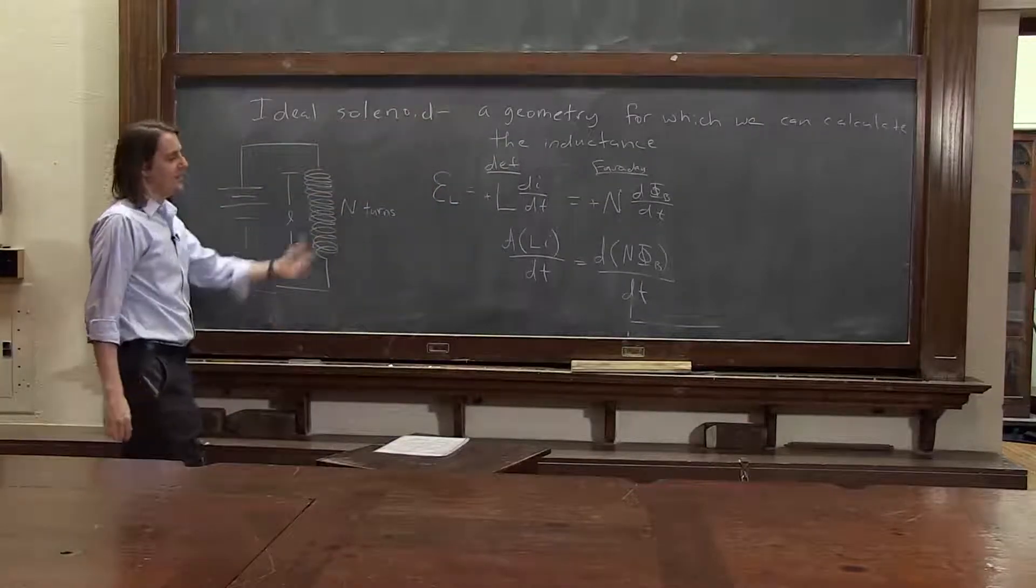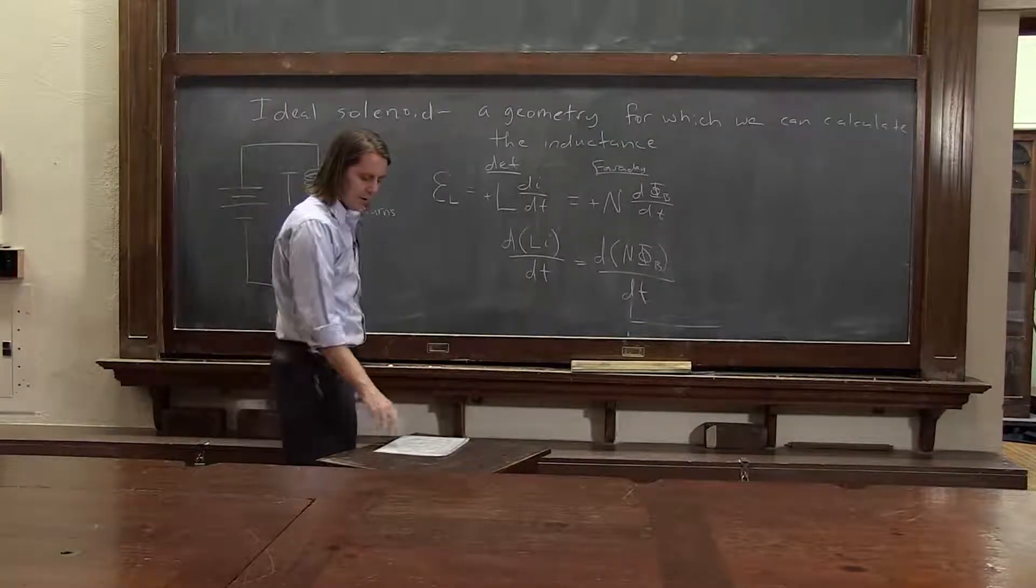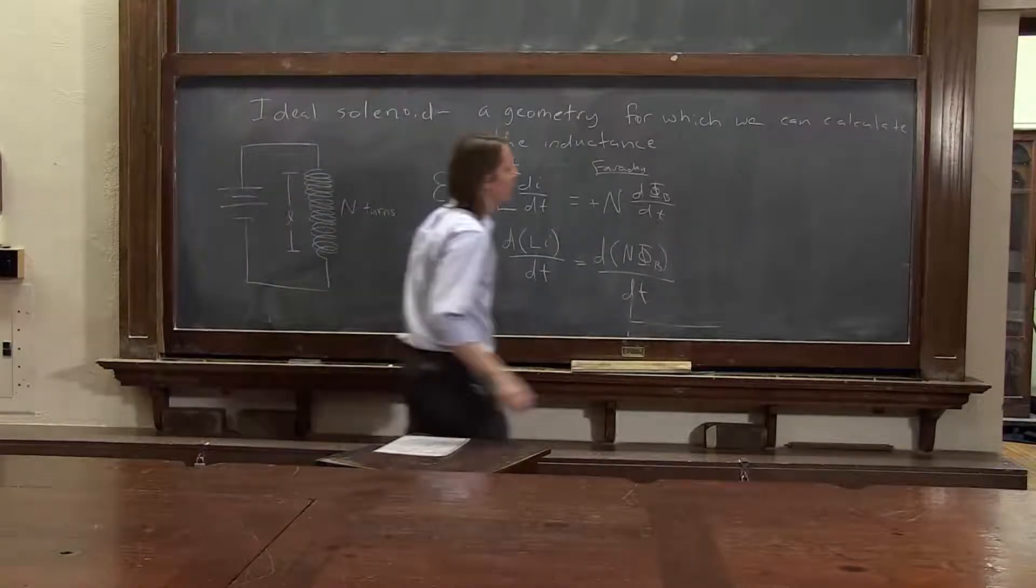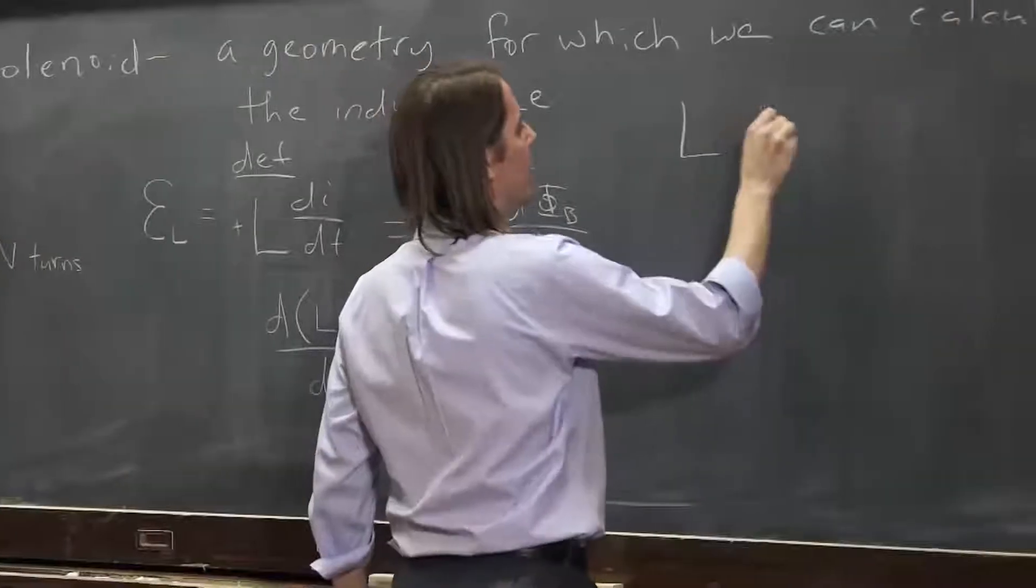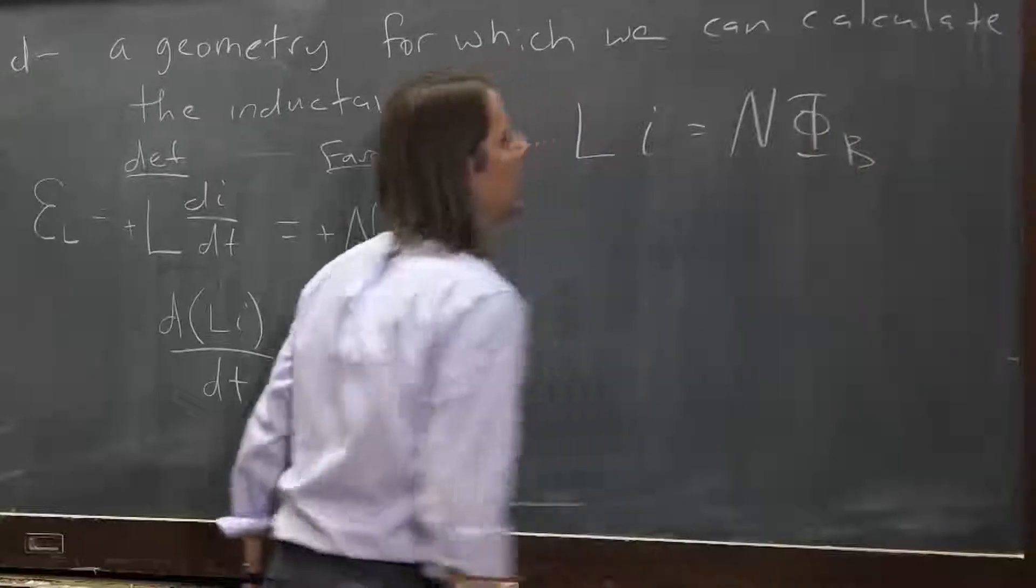What we'll find is that d of L i dt equals d of n phi b dt. Well, in that case the things in the parentheses are equal. Right? The time derivative of each of these is equal. We'll say the two things are also equal. So the inductance times i equals n times phi b.